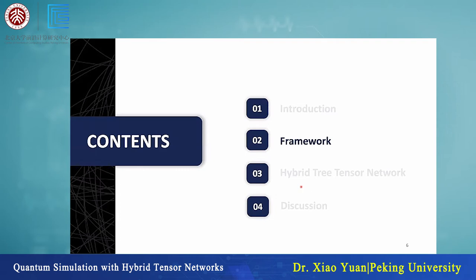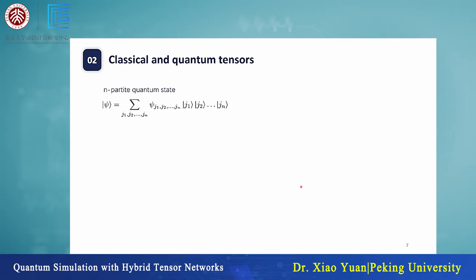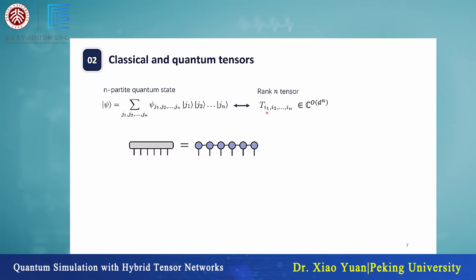Let's look at the framework of the hybrid tensor network. For some multipartite quantum states, such as n-qubit states, we can decompose them in a computational basis, where the amplitude corresponds to a rank-N tensor—basically a multidimensional array with many indices, each of dimension d. We can use a quantum state to represent the state, but using the tensor network method we can also represent or approximate it. On the left we have a multidimensional array, and on the right we have a special form of the state.